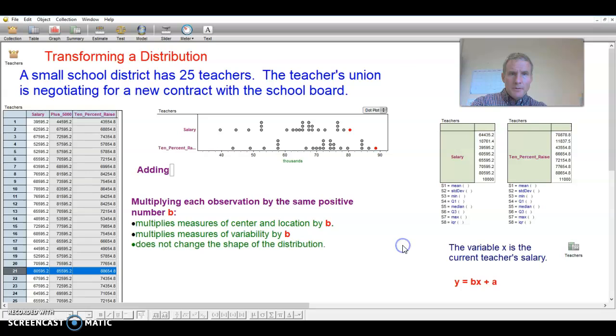So, you can then predict how things would change. If that was the case, then you could take the old centers, such as mean, and then you would multiply by 1.02. And then you would also have to add the 1,000, and then that would be the new mean. And you could do the same with the other centers. If this was variability, adding the 1,000 would not affect variability at all.